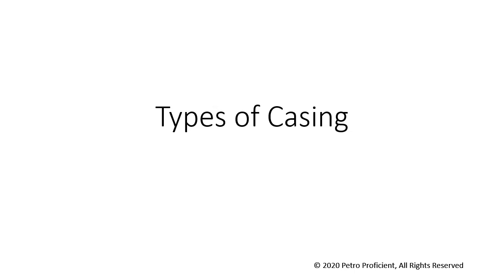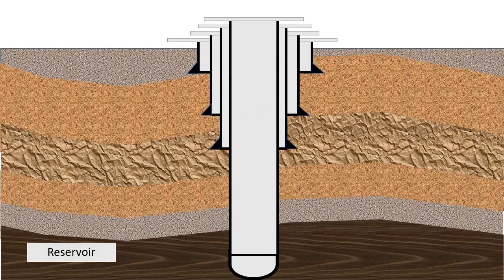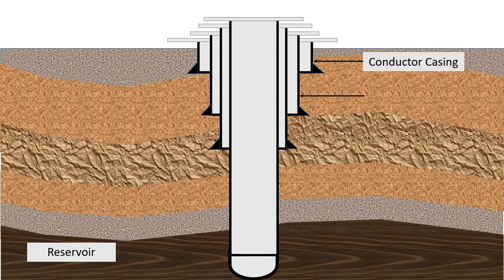Welcome to Petro Proficient. This video describes the purpose and use of tubular goods called casing, used in the construction of oil and gas wells. By the time a well is drilled to its final depth, it usually has several strings of casings, termed conductor casing, surface casing, intermediate casing, and production casing.